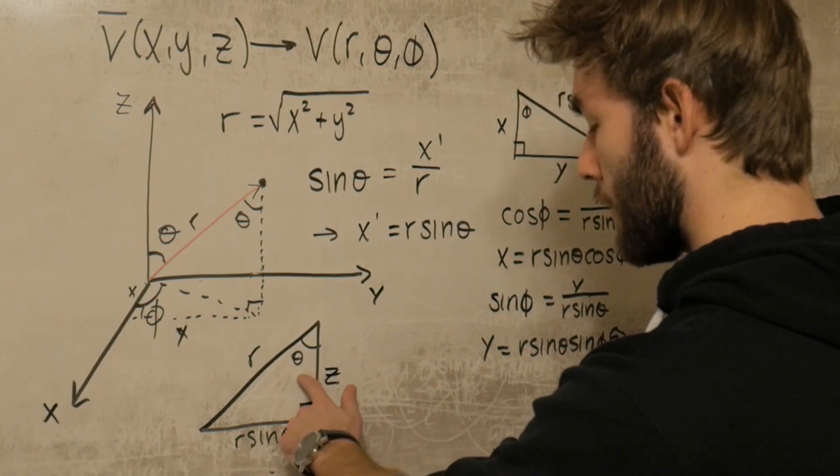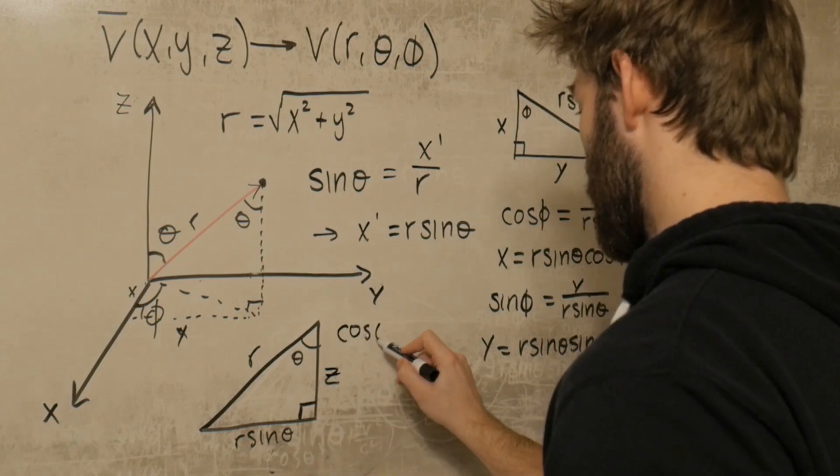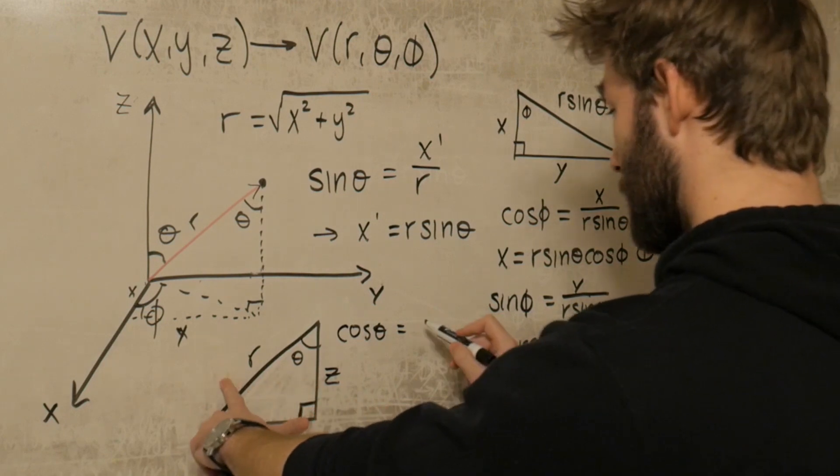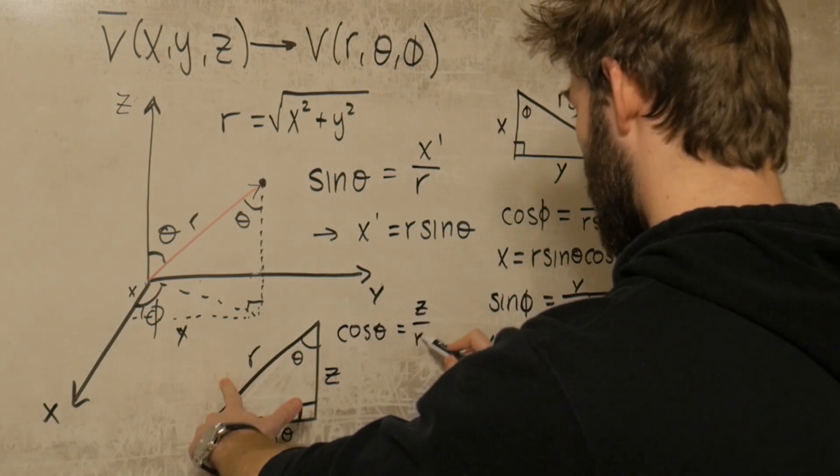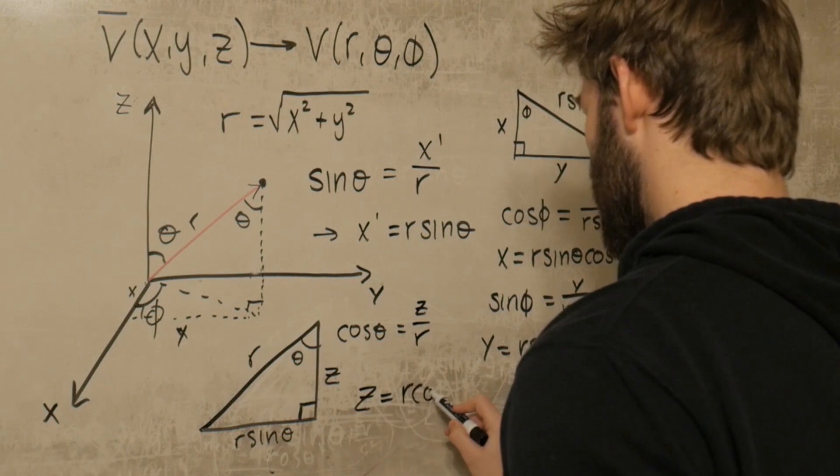And what we can do is we can find out what the cosine of this theta is. We can find that cosine theta is equal to adjacent over hypotenuse, so z over r, and we get that z is equal to r cosine theta.